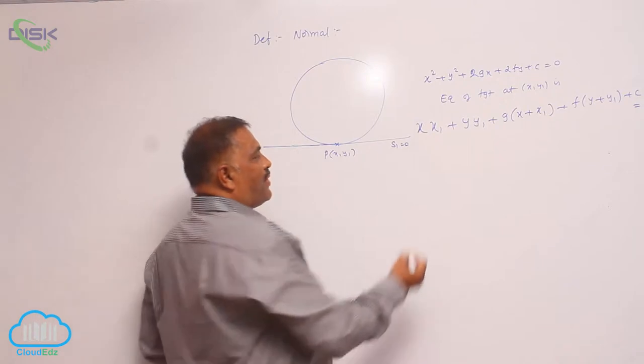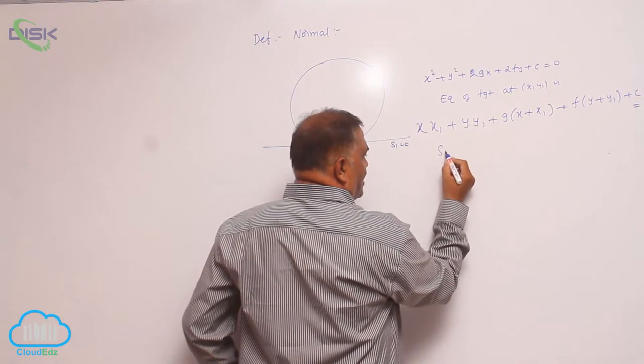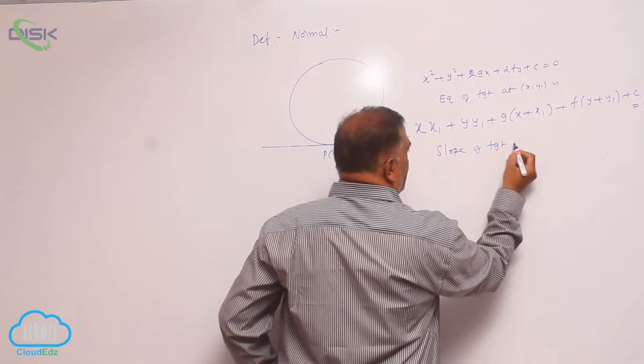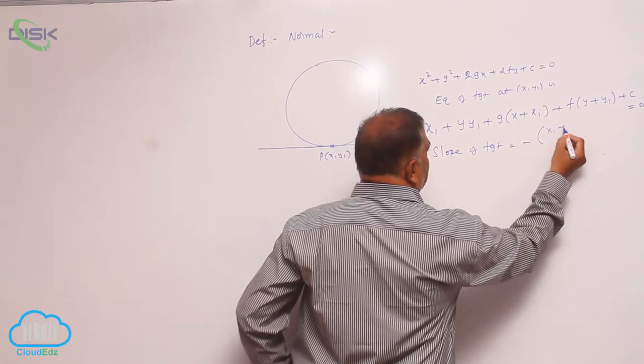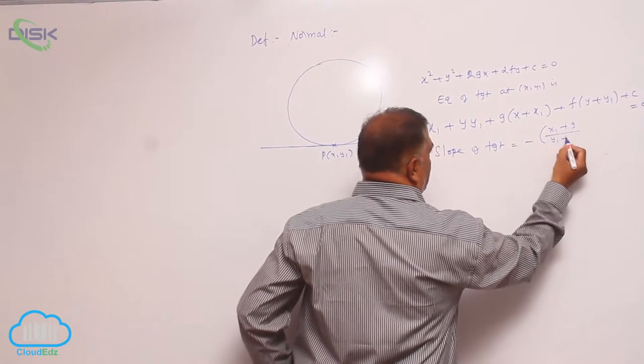From the tangent equation, the slope of tangent is -(x₁ + g)/(y₁ + f).